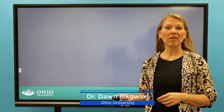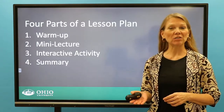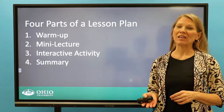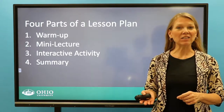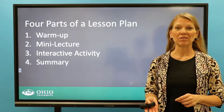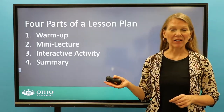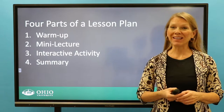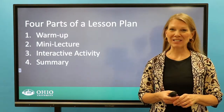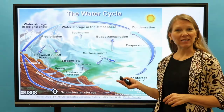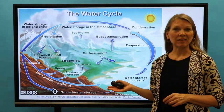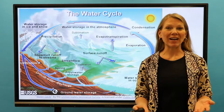Welcome to our video on planning interactive lessons in the EMI classroom. In this video, we will cover the four main parts of a lesson plan and give examples of how to create student-centered learning opportunities for each of these parts in order to give students the support they need to reach the lesson objective. The four parts of a lesson plan are a warm-up, a mini-lecture, an interactive activity, and a summary. We will use the water cycle as a topic for this lesson, and also bring in examples from an EMI instructor.